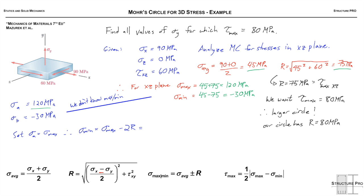Then we can compute the minimum value that we need for Sigma Y to be. So Sigma min, and that's that R that we want, that 80 MPa. So 120 minus 2 times 80, the diameter of the circle, is negative 40 MPa.